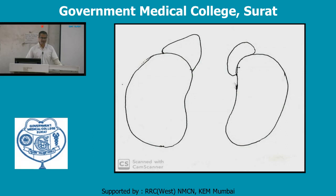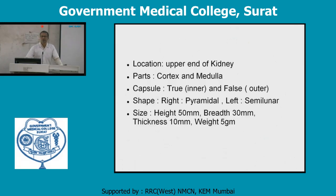The two suprarenal glands are different in shape. The right suprarenal gland is pyramidal or triangular in shape, while the left is semilunar. The suprarenal gland shows two parts: cortex and medulla. The cortex is the outer part and the medulla is the inner part. Developmentally and functionally, these two parts are different.